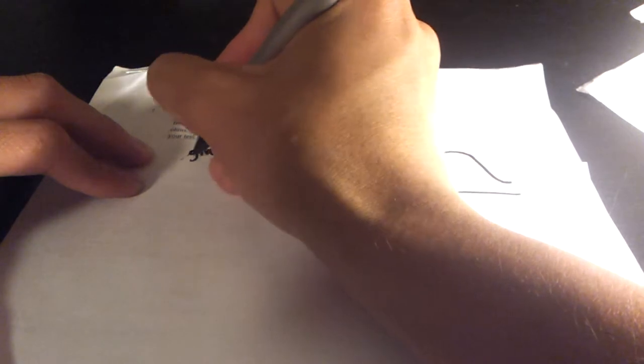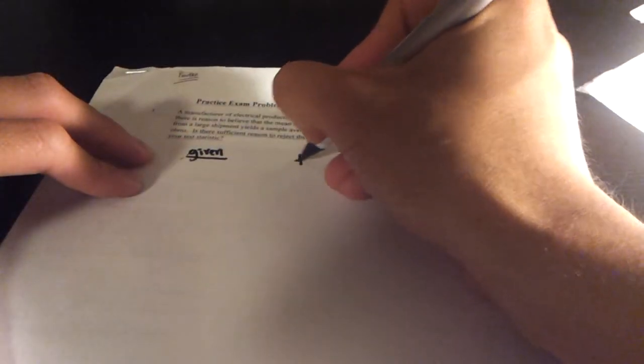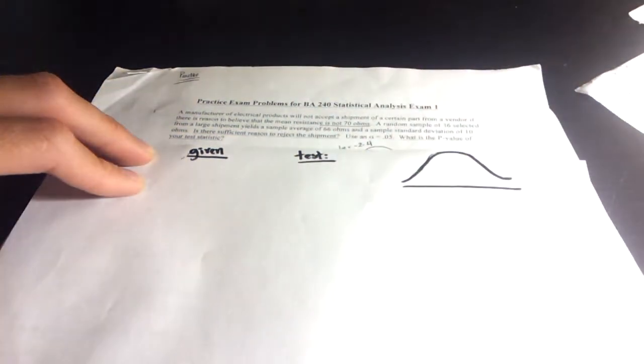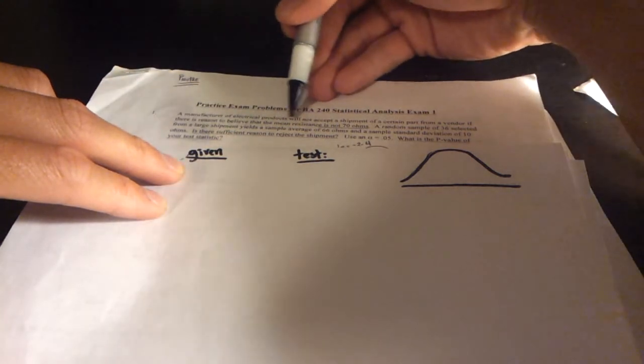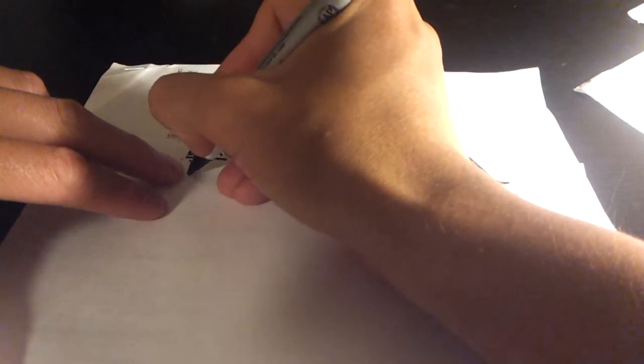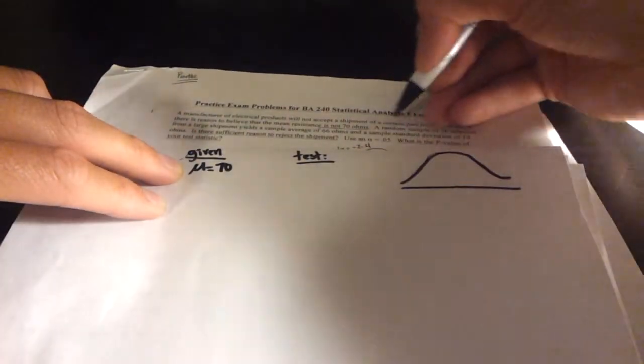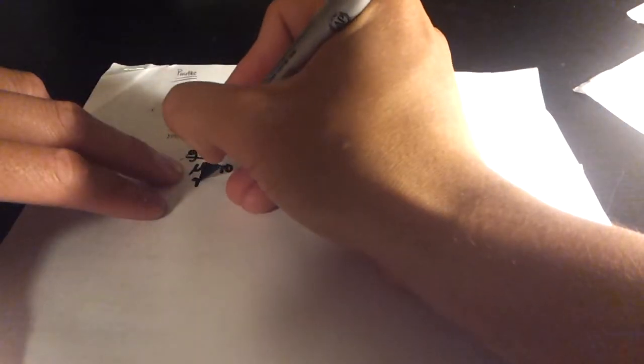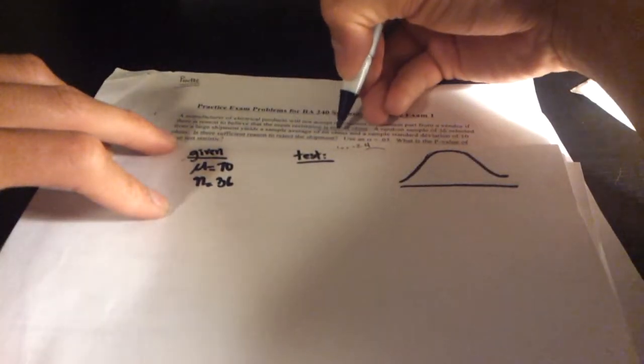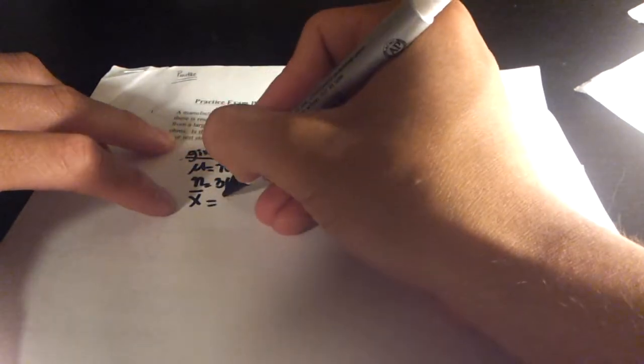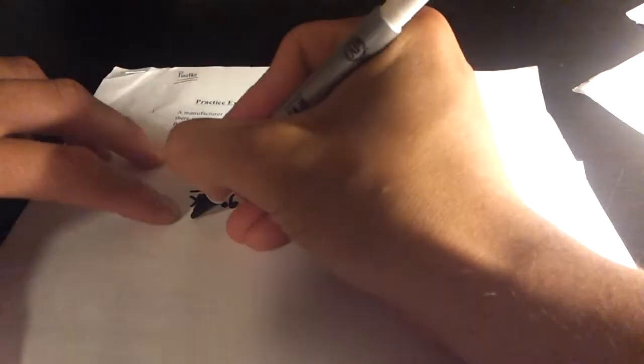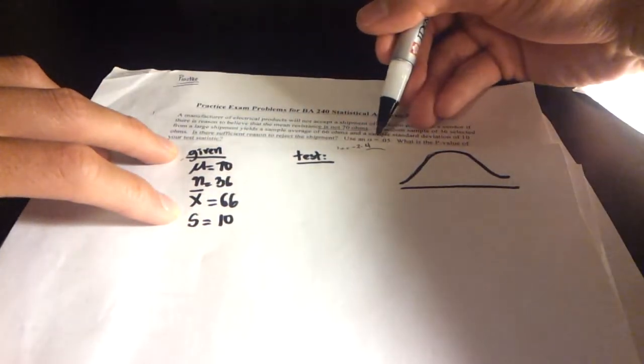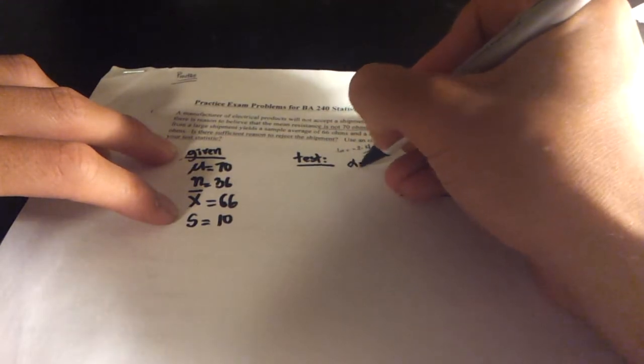The next thing I like to do is write out the given information that I get from reading the question and the test. So the given information are, if you read this part over here, resistance is not 70 ohms. So 70 is a mu, so μ equals 70. And the sample size is 36, so n equals 36. It says that the sample average is 66 ohms, so the sample average is x-bar, it's 66. And the standard deviation is 10, so s equals 10. And if you keep reading, the alpha level is equal to 0.05. I'm going to put the alpha level at the test over here, 0.05.